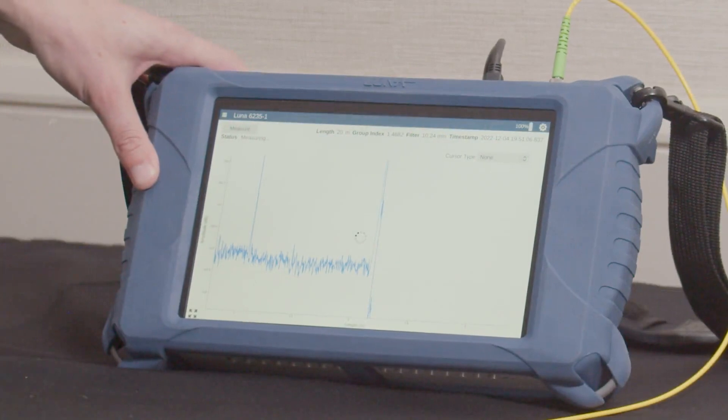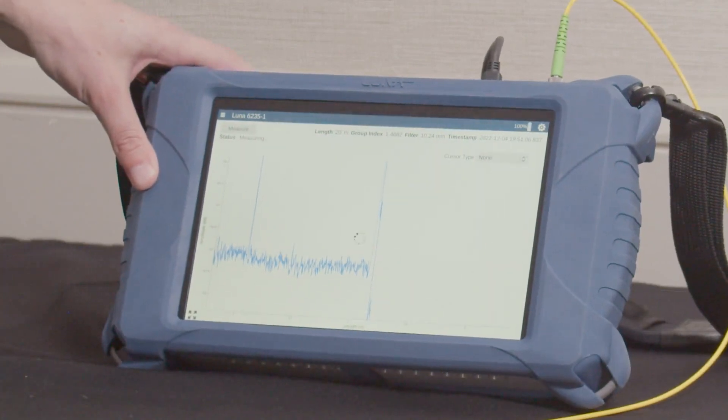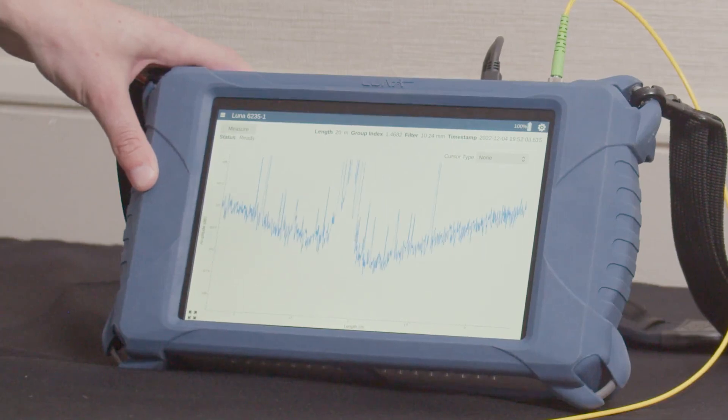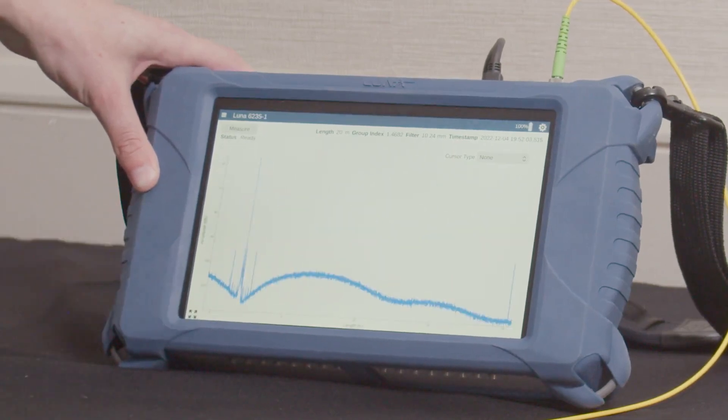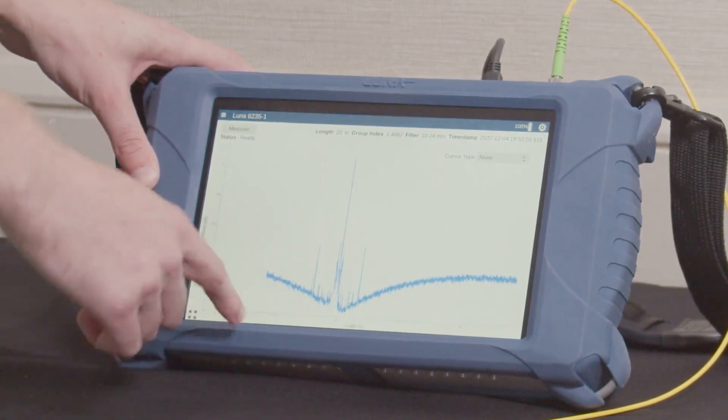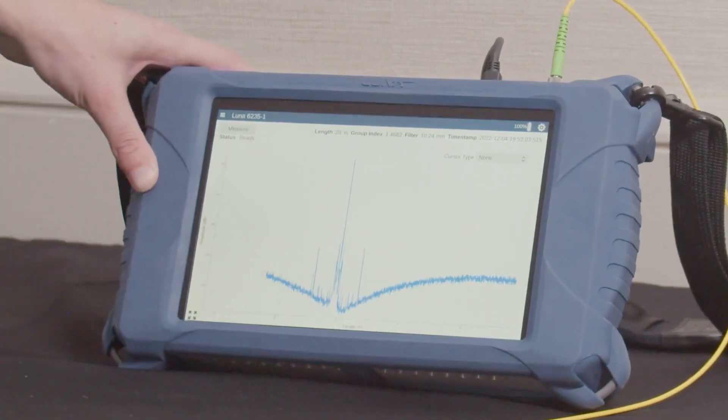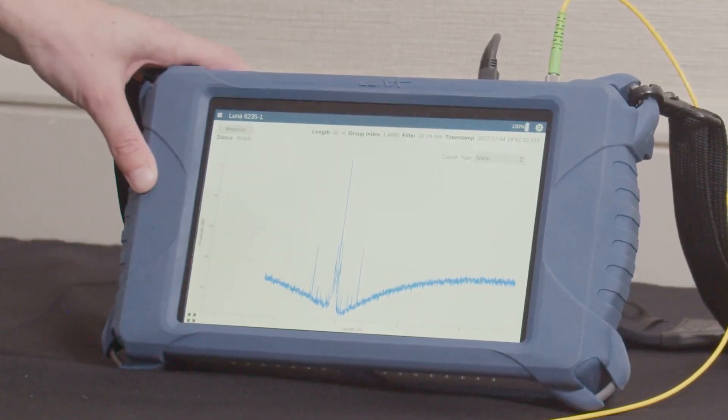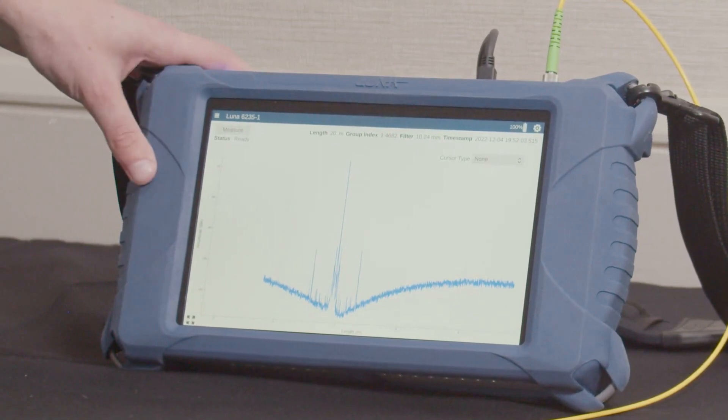We'll take another measurement of the second path in this airplane. We'll rescale, and we'll see rather than being some nice simple connections, you see one really large reflection. This is actually a fiber break inside of our fiber path.